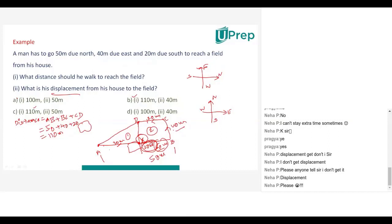XD will be 40 meters. Why? Because it looks like a rectangle, so opposite sides are equal: CD equals BX — that's why 20. BC equals XD — that's why 40. So we have AX = 30 meters, XD = 40 meters, and we need to find AD.